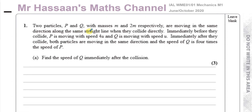The question says: two particles P and Q with masses M and 2M respectively are moving in the same direction along the same straight line when they collide directly. Immediately before they collide, P is moving with speed 4U and Q is moving with speed U. Immediately after they collide, both particles are moving in the same direction and the speed of Q is four times the speed of P. Find the speed of Q immediately after the collision.